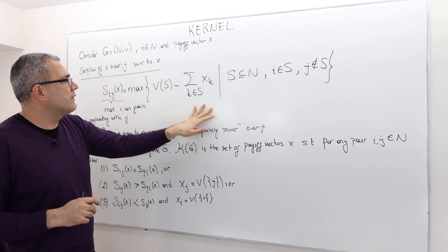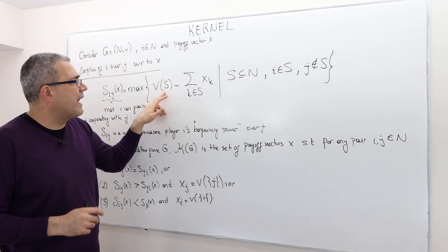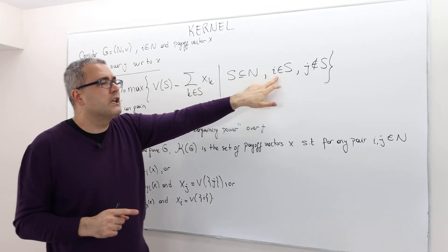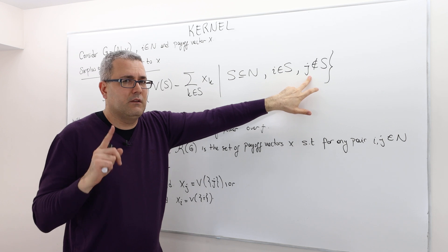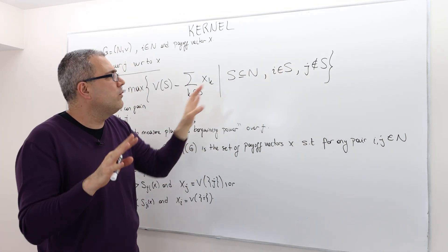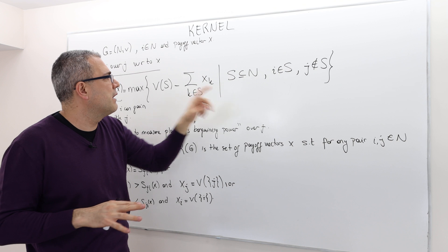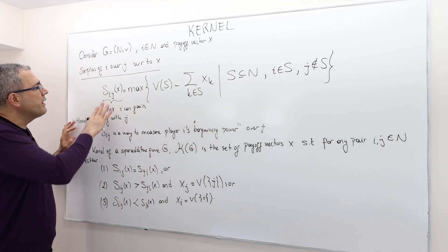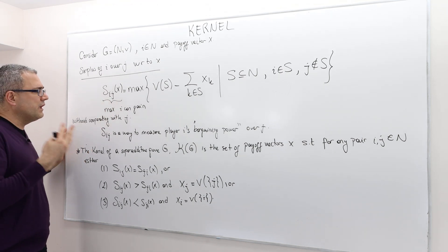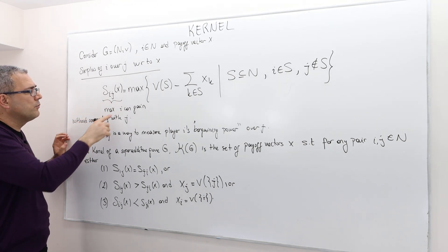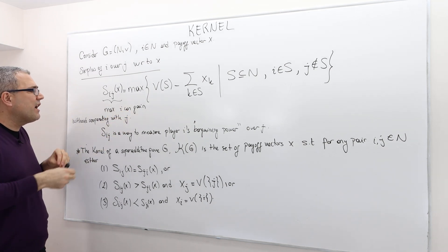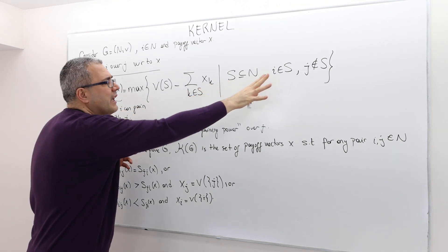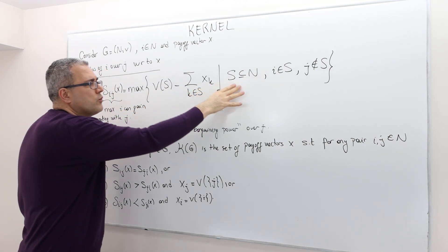However, we do not look at this deficit for every coalition. We only look at coalitions S which include player i but not player j. So out of all possible coalitions, player i must be in S and j must not be. That's very, very critical.